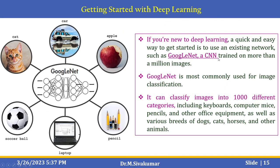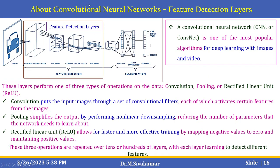Convolutional neural networks (CNNs) consist of feature detection layers followed by classification layers. The feature detection portion includes combinations of convolution layers, ReLU layers, and pooling layers. Convolution filters activate certain features from images. Pooling simplifies the output through non-linear downsampling to reduce the number of parameters the network needs to learn. The ReLU layer allows faster and more effective training by mapping negative values to zero and maintaining positive values.